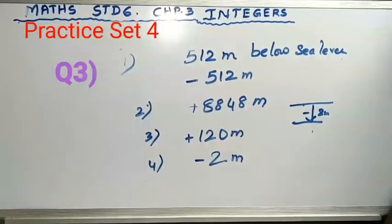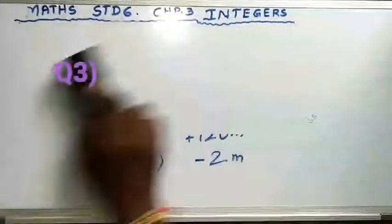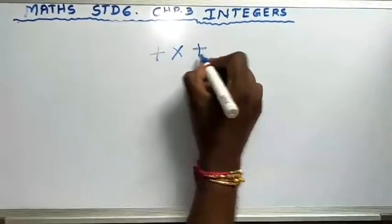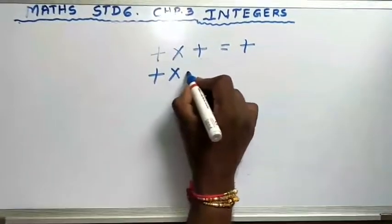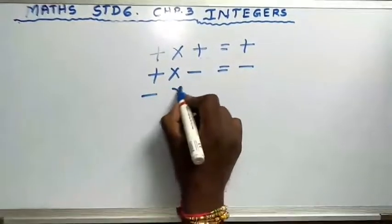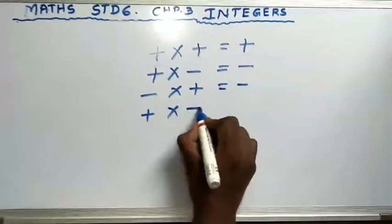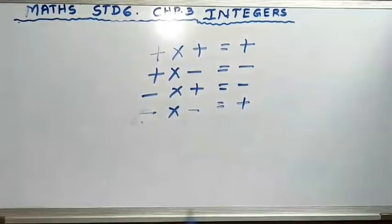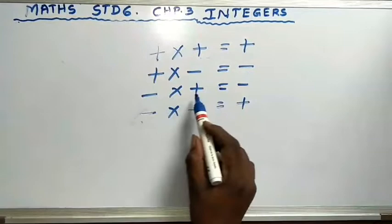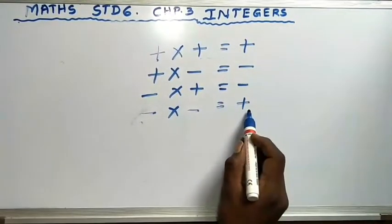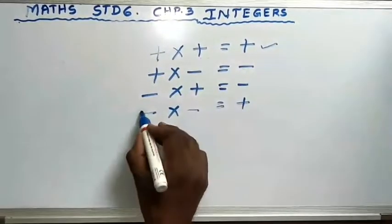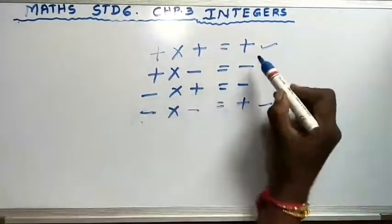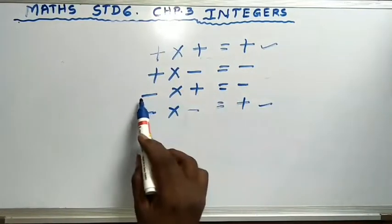Today we will learn something new using some signs. The rules are: plus into plus equals plus, plus into minus equals minus, minus into plus equals minus, minus into minus equals plus. When both sides are positive, the result is positive. When both sides are negative, the result is positive. But if any one side — either left or right — has a negative sign, the result is negative.